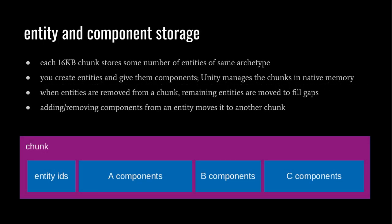The key to understanding ECS is to understand how it stores entities and their components in memory. A chunk is a 16-kilobyte block of natively allocated memory that stores some number of entities with the same archetype. The chunk is split into four parallel arrays: the first for storing entity IDs, the second for storing the A components, the third for storing the B components, and the fourth for storing the C components.